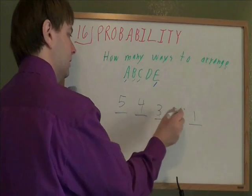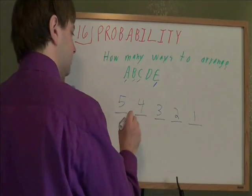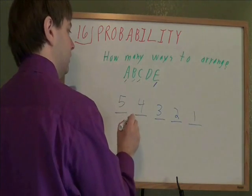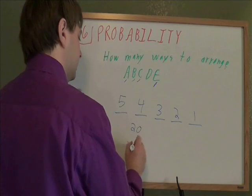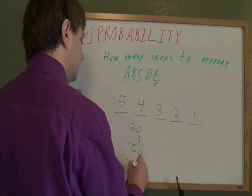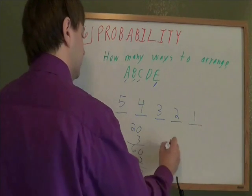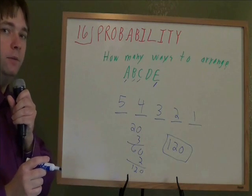And you just multiply together the number of choices in each slot to get the total number of choices for all the ways to rearrange those letters. Five times four is 20, times three is 60, times two is 120, times one is still 120. There are 120 different ways to put these five letters in order.